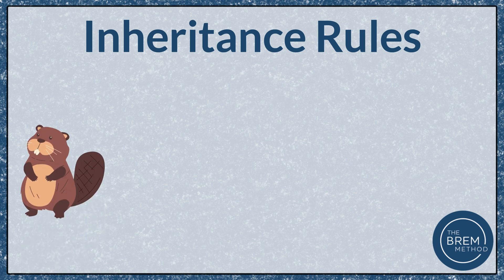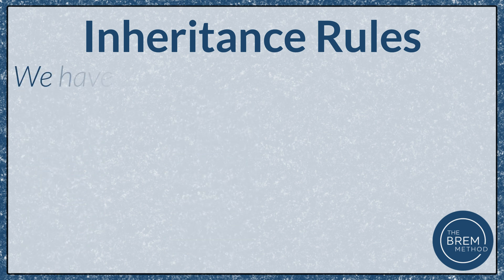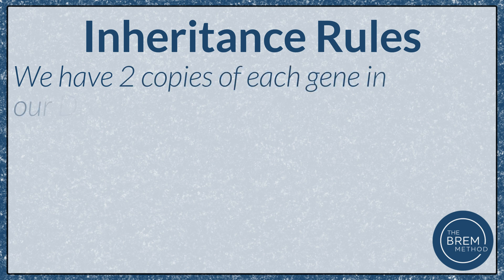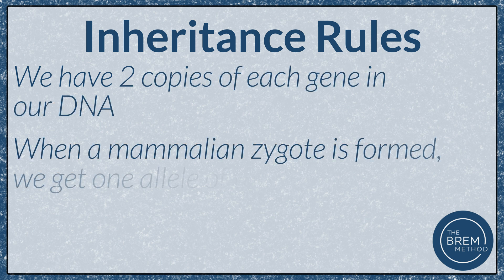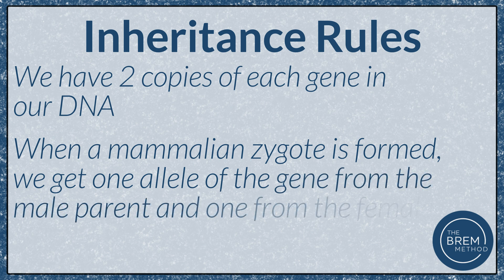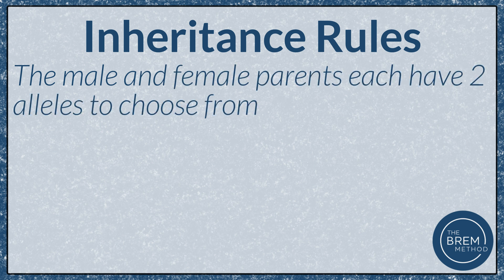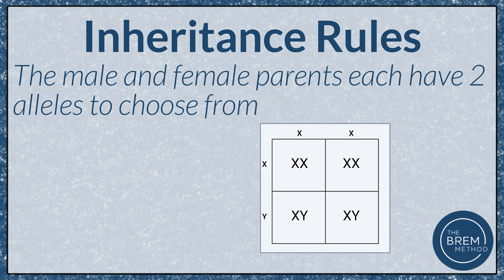Now for some inheritance rules. For mammals including humans, we have two copies of each gene in our DNA. When a mammalian zygote is formed, we get one allele of a gene from the male parent and one from the female parent. But the male and female parents each have two alleles to choose from, so we can end up with four different combinations. That's why we use Punnett squares to figure out and view the probabilities of each of those combinations.